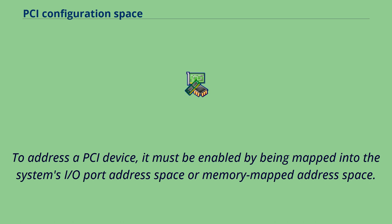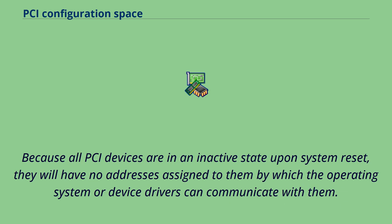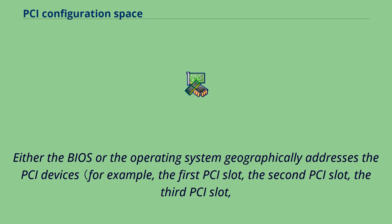To address a PCI device, it must be enabled by being mapped into the system's I/O port address space or memory-mapped address space. The system's firmware or the operating system programs the base address registers to inform the device of its resource configuration by writing configuration commands to the PCI controller. Because all PCI devices are in an inactive state upon system reset, they will have no addresses assigned. Either the BIOS or the operating system geographically addresses the PCI devices.